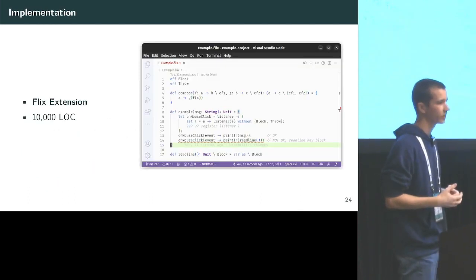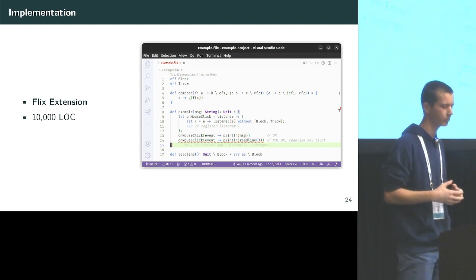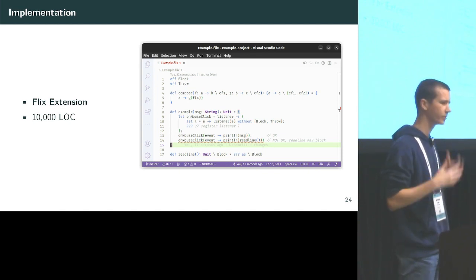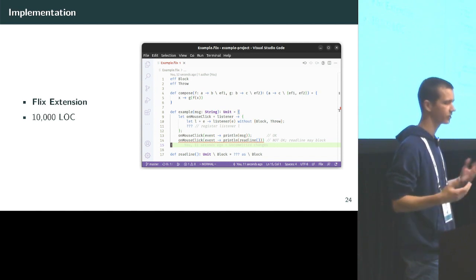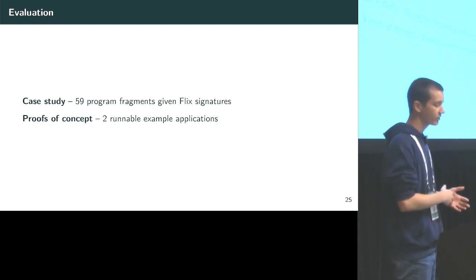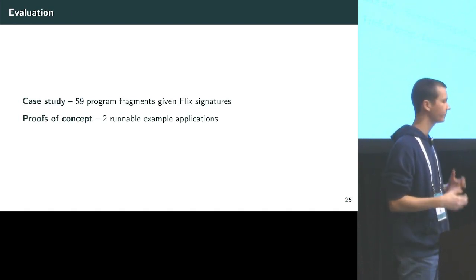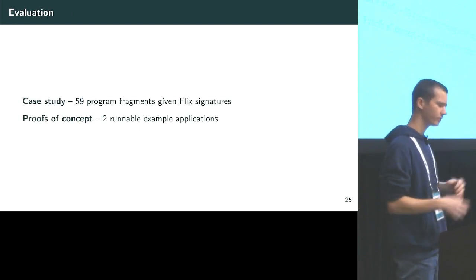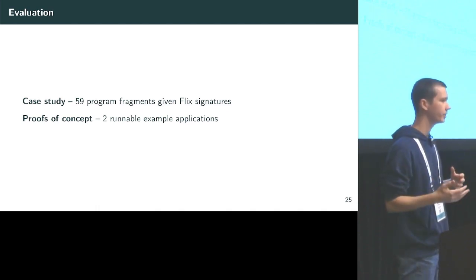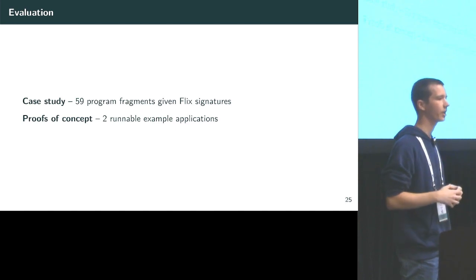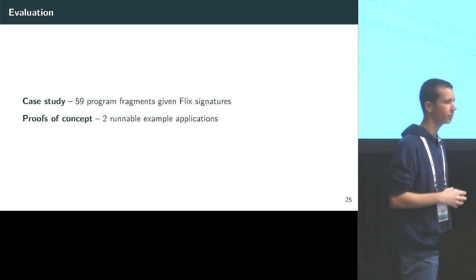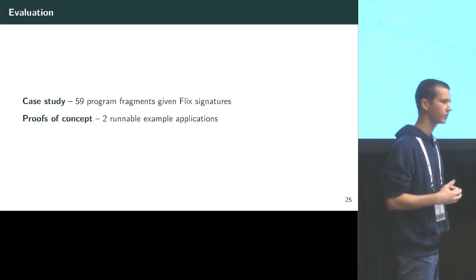We've implemented our system as an extension to the programming language Flix, written in about 10,000 lines of code. We support a VS Code extension including syntax highlighting and error reporting. We've evaluated our system in a case study of 59 program fragments whose documentation expresses effect exclusion, and we've given them effect-type signatures that enforce the exclusion. We've also provided two proofs of concept: runnable example applications that demonstrate our system in practice.